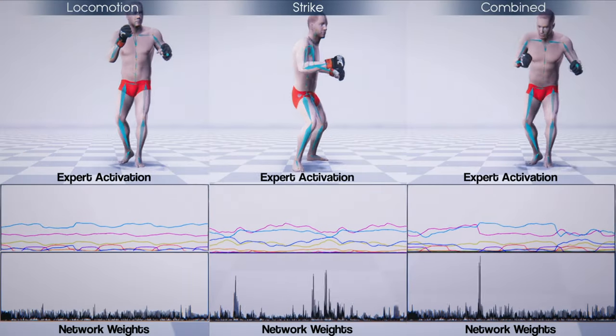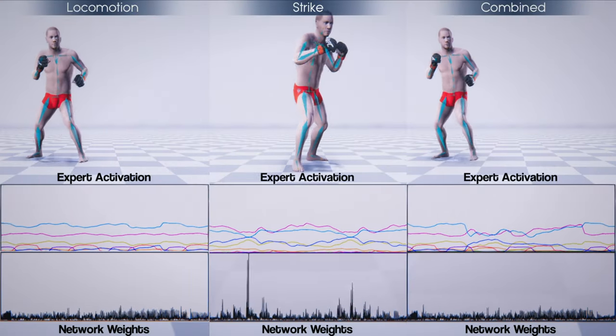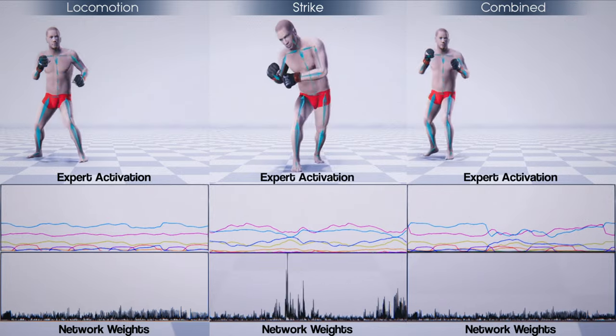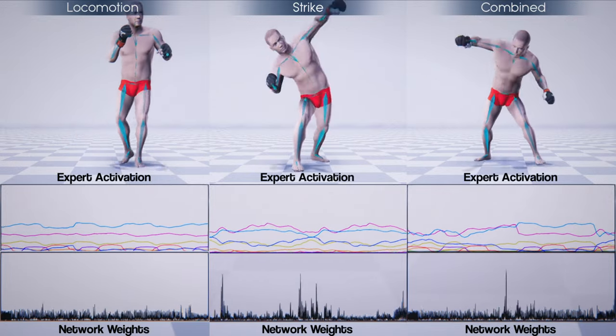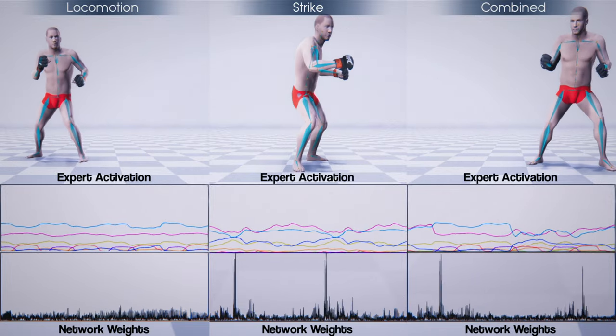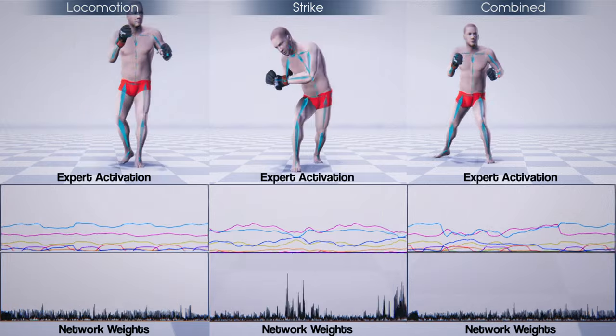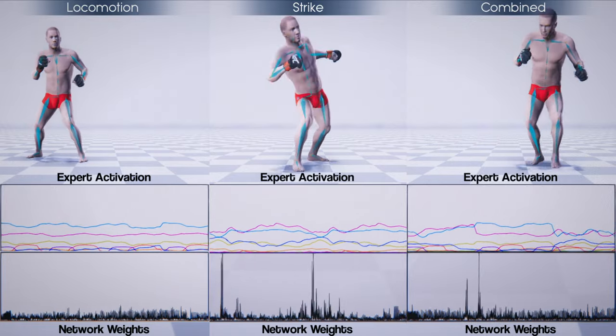Here we show the gating weights and blended network weights for layering two different movements into one. The blended weights maintain characteristic patterns in order to synthesize the combined animation.